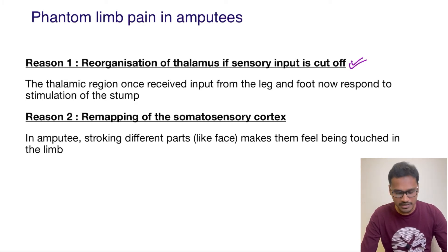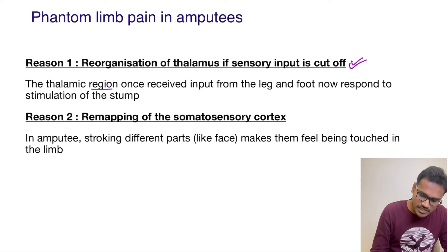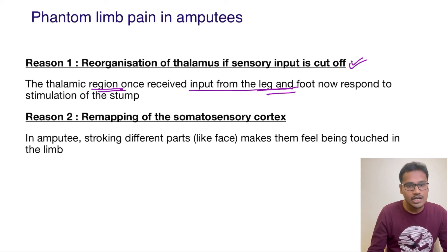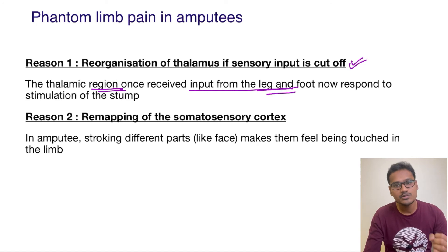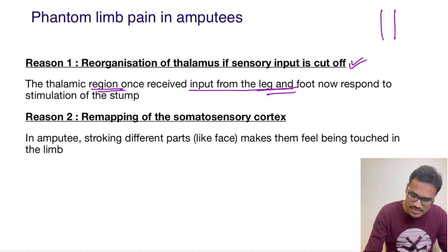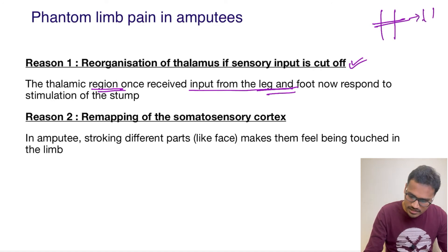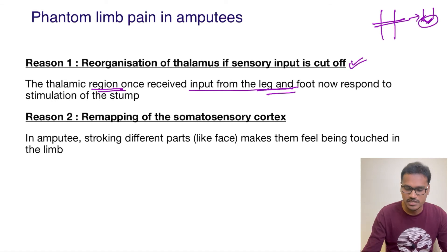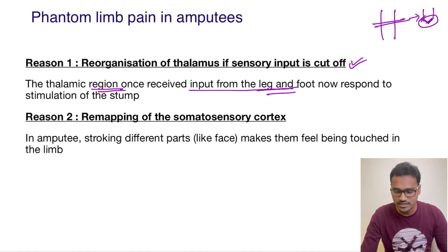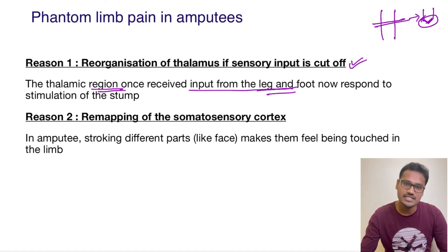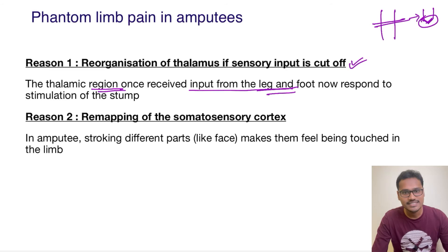Previously, the thalamic region was receiving inputs from the leg and foot. After amputation, that region will now respond to the stump region instead. The stump is the area where the re-suturing and closure is done after the leg is amputated. So whenever the stump gets stimulated, the patient feels as if their limb is getting stimulated, and they feel the sensation as if the limb is still present.